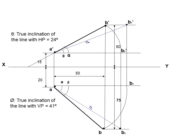Step 8. Find horizontal trace. Produce a'b' to meet XY at point h'. Project h' to meet ab produced at point H which represents the horizontal trace.